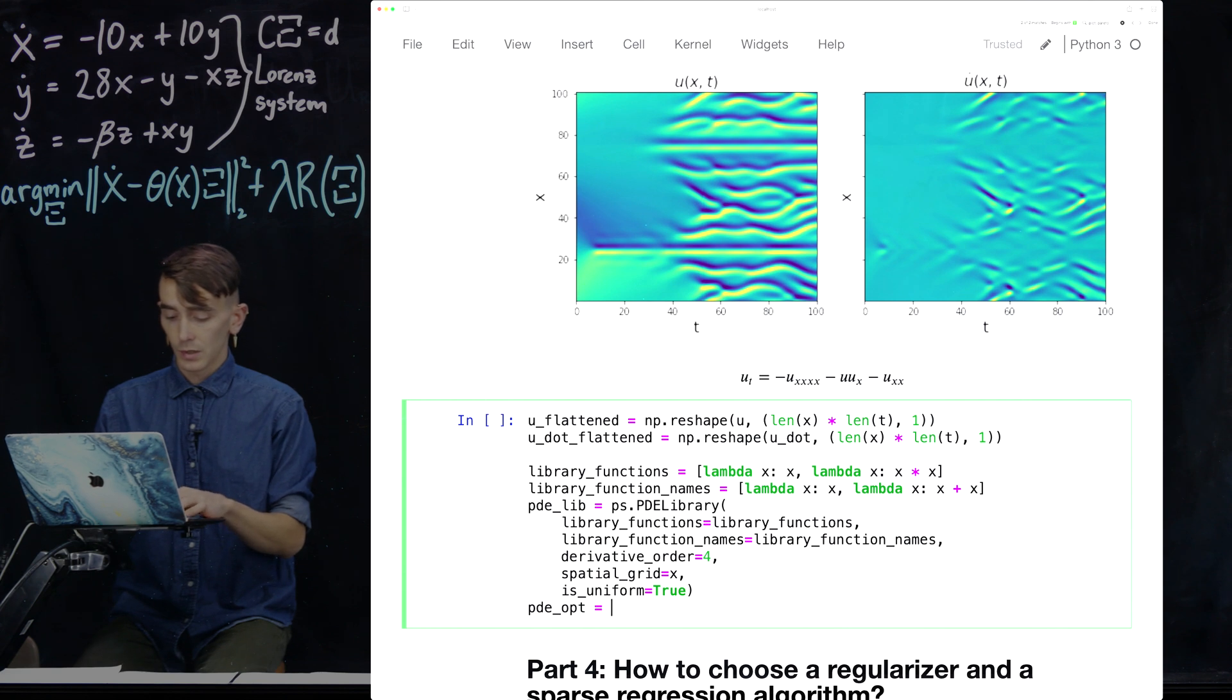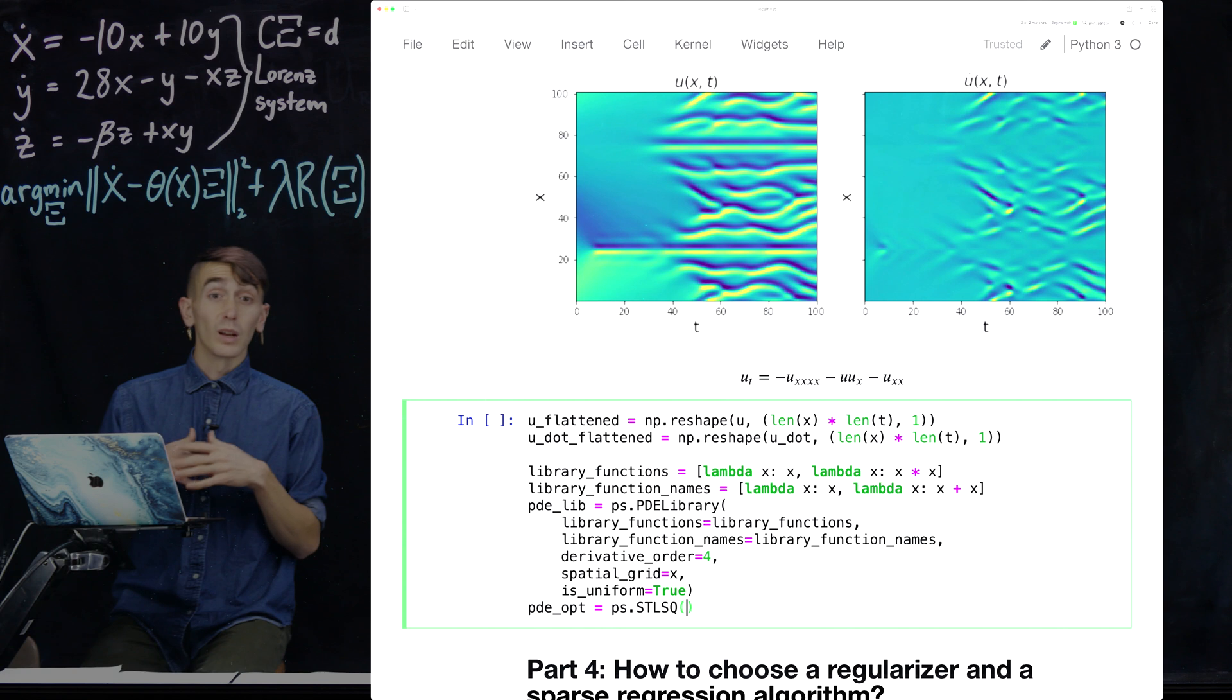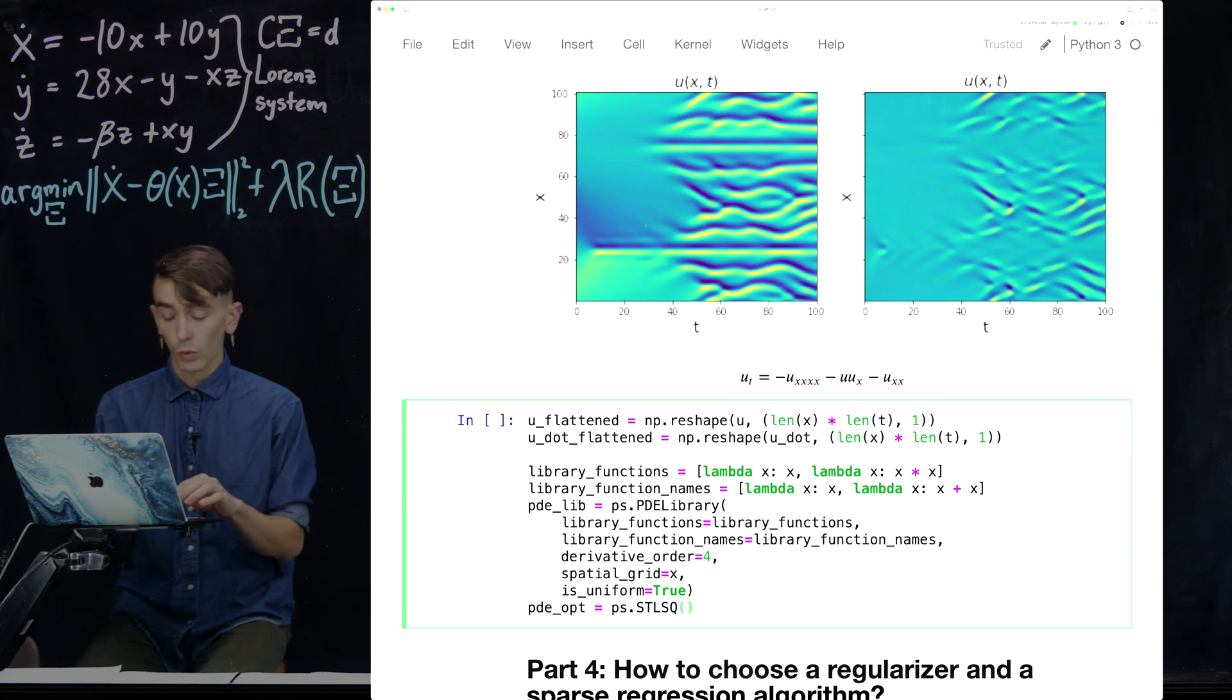So let's do PDE_opt equals sequentially threshold least squares. So again, because we've done everything in the library, you can actually still use any of the sparse regression optimizers that were available before. So pick whatever one you want. We're going to pick some threshold. And we're also going to use this flag normalize_columns equals true.